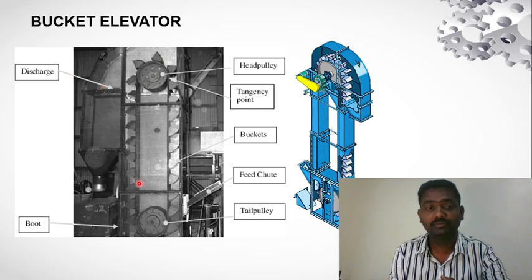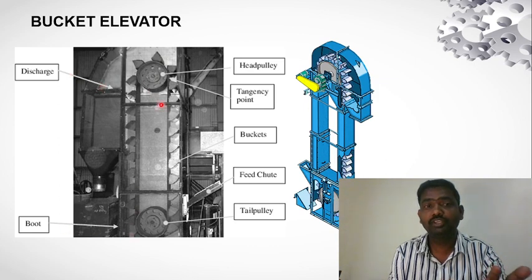At the top, we have the head pulley, which drives the belt or chain carrying the buckets. This is the main drive mechanism of the bucket elevator.